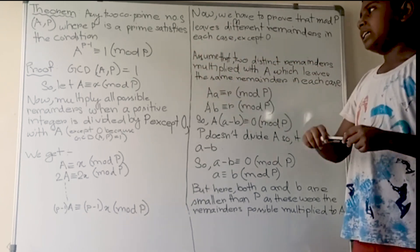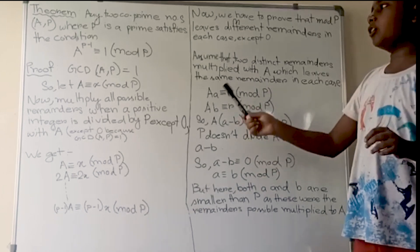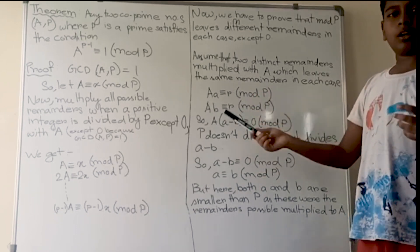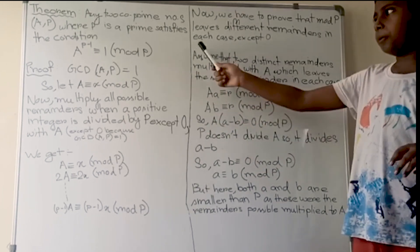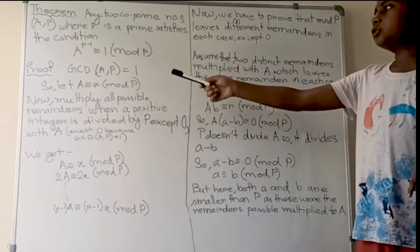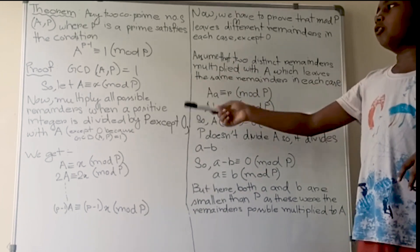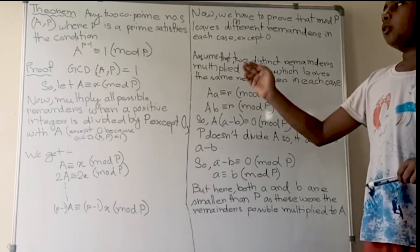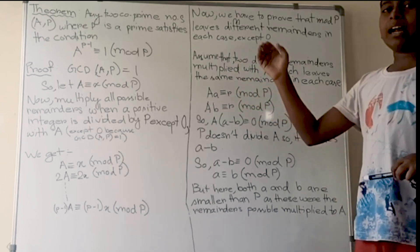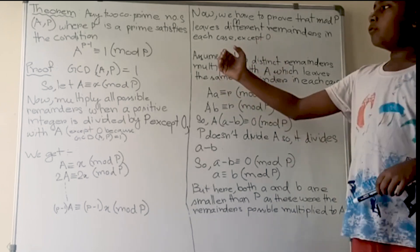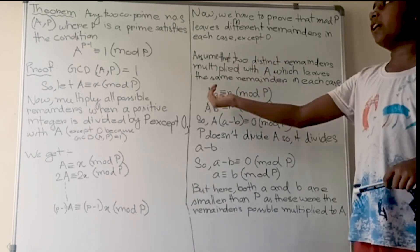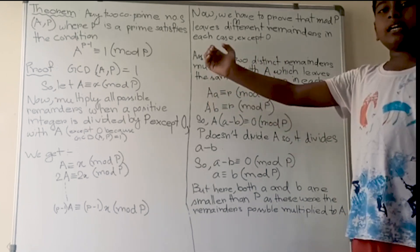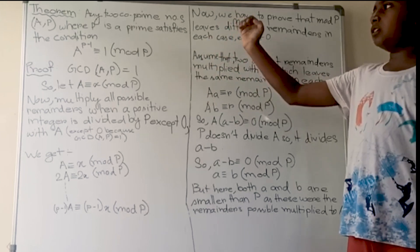Now we will move on to the proof. GCD of a and p equals 1 because these are co-prime numbers. So let a be congruent to x mod p, meaning when p divides a, we get a remainder of x.